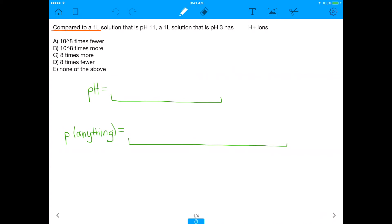It says, compared to a 1 liter solution that is pH 11, a 1 liter solution that is pH 3 has blank H+ ions, and then you have a certain number more, a certain number fewer, et cetera.